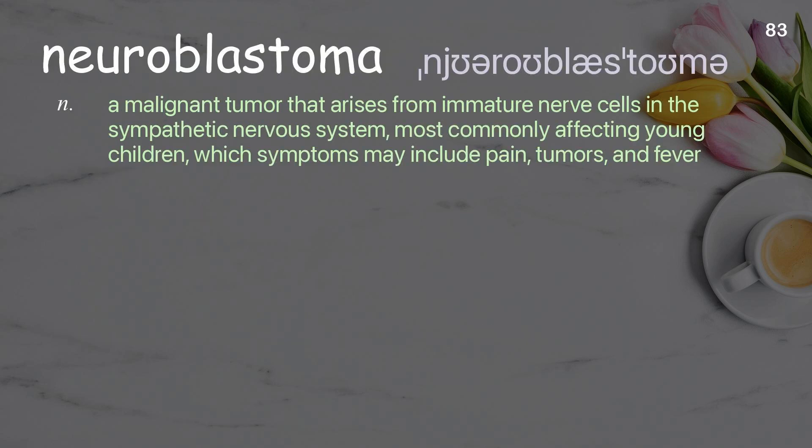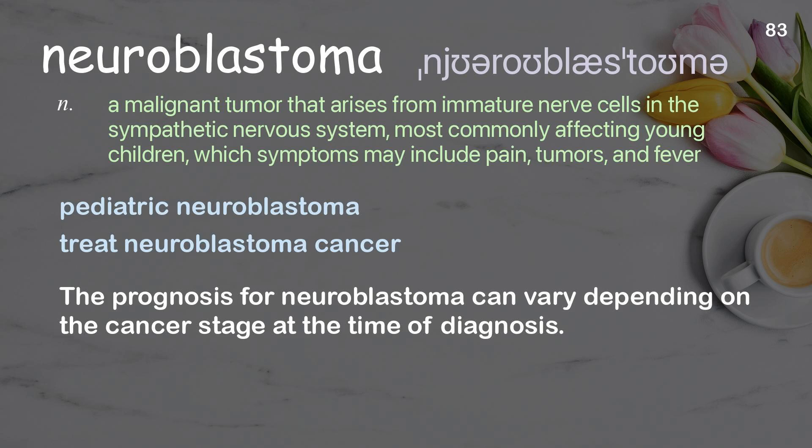Neuroblastoma: a malignant tumor that arises from immature nerve cells in the sympathetic nervous system, most commonly affecting young children, with symptoms that may include pain, tumors, and fever. Examples: pediatric neuroblastoma, treat neuroblastoma. The prognosis for neuroblastoma can vary depending on the cancer stage at the time of diagnosis.